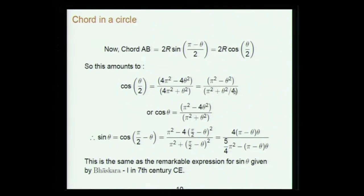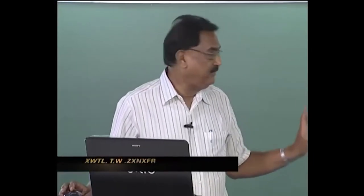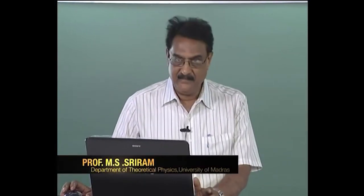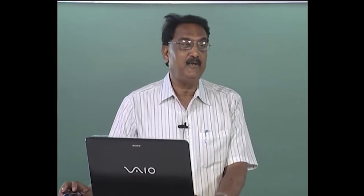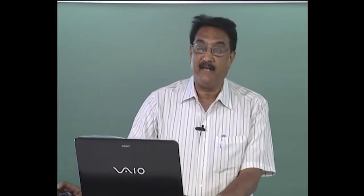Substituting θ/2 → θ: cos θ = (π² − 4θ²) / (π² + θ²). And sin θ = cos(π/2 − θ), so substituting gives 4(π − θ)θ / (π(4π² − (π − θ)θ)). I have not derived this result; I have only expressed whatever Bhaskar has said in this form, in order to compare it with the expression given by Bhaskar 1 way back in the 7th century.